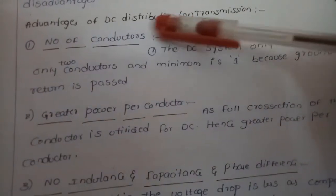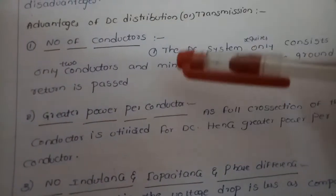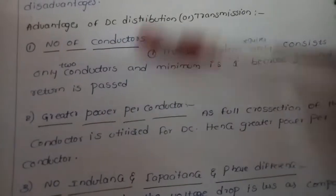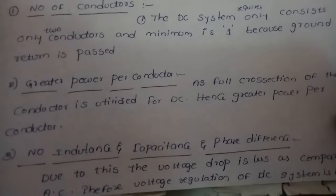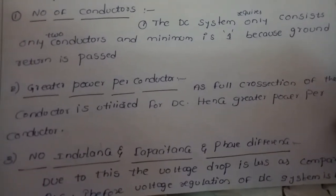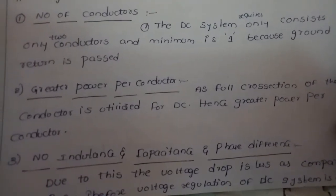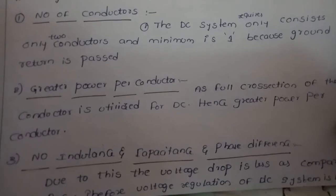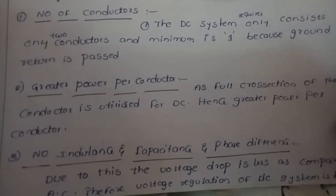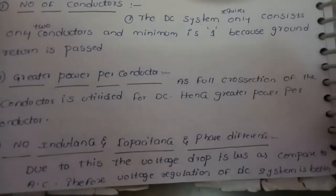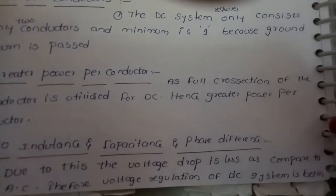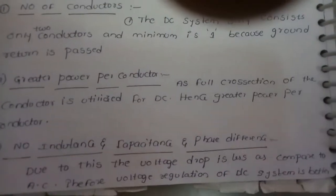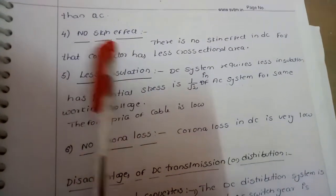DC systems have no inductance, no capacitance, and no phase difference, because the frequency is zero. Due to this, voltage drop is less compared to AC and therefore the voltage regulation of the DC system is good.